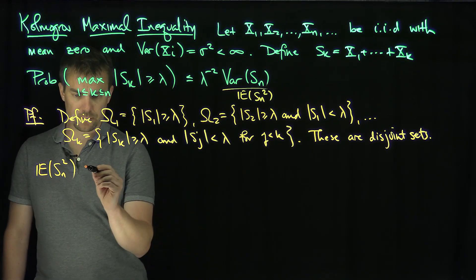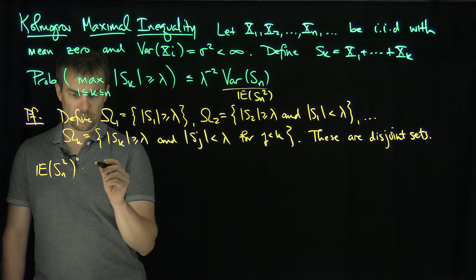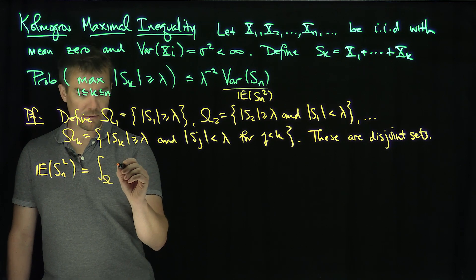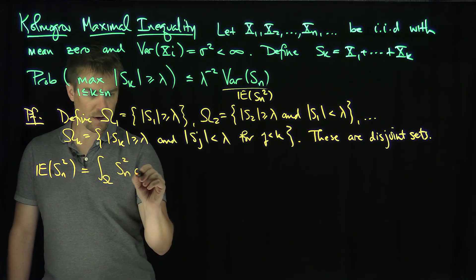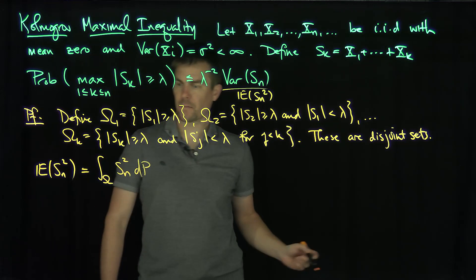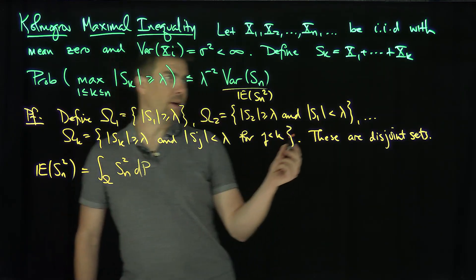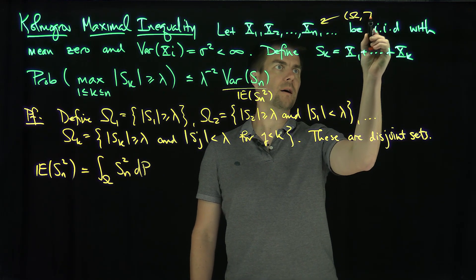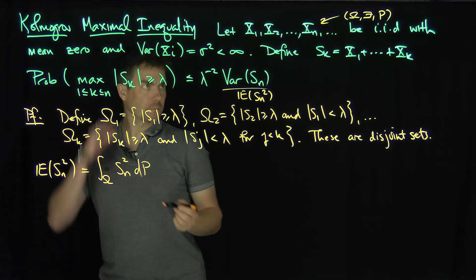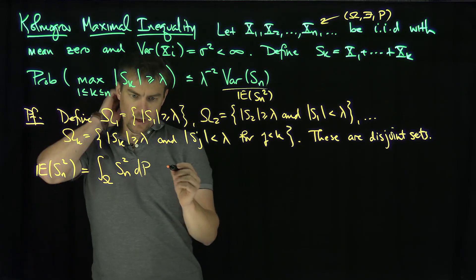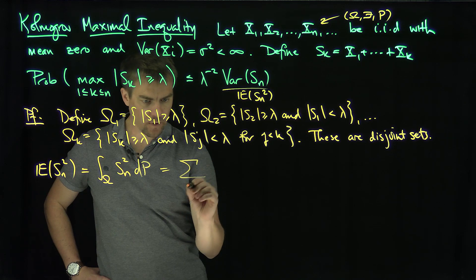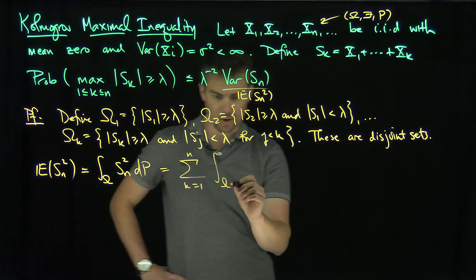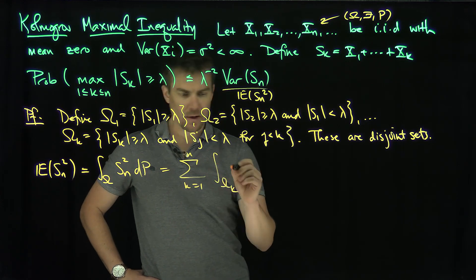This is bigger than or equal to the integral over the probability space of sn squared dp, by definition. Now I can write this as the sum — k goes from 1 up to n — of the integrals over the disjoint omega_k's. By partitioning the space into these omega_k's, we integrate sn squared over each piece.